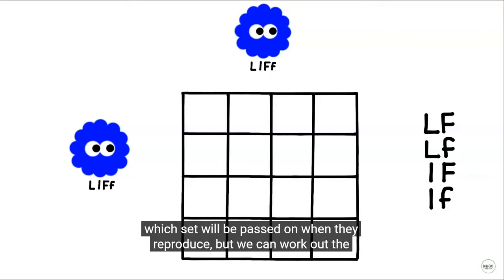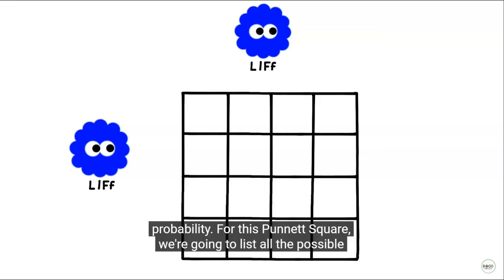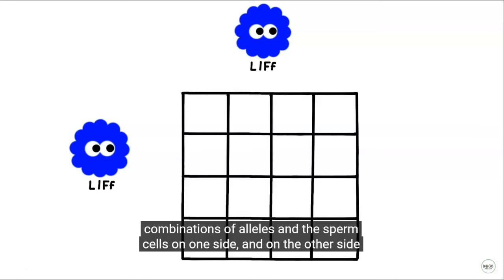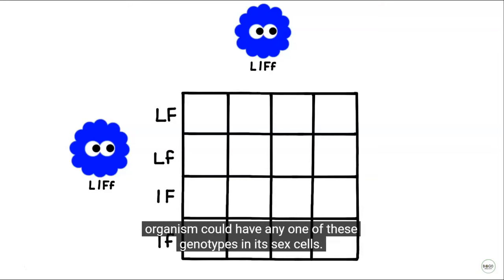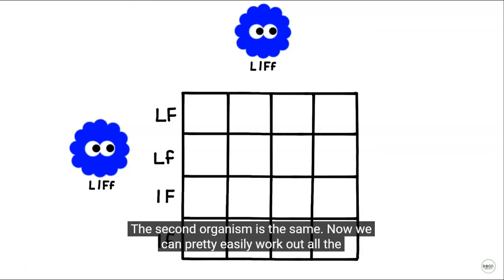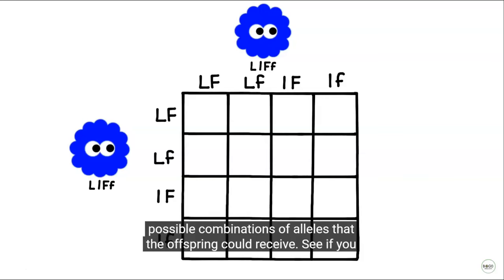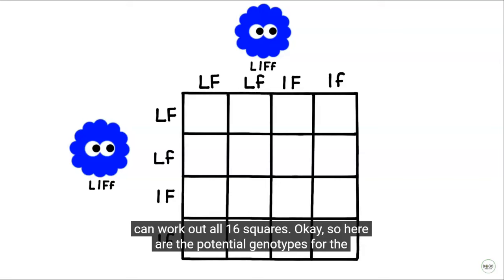We don't know which set will be passed on when they reproduce, but we can work out the probability. For this Punnett square, we're going to list all the possible combinations of alleles in the sperm cells on one side, and on the other side we'll list all the possible combinations of alleles in the egg cells. This first organism could have any one of these genotypes in its sex cells, and the second organism is the same. Now we can pretty easily work out all the possible combinations of alleles that the offspring could receive. See if you can work out all 16 squares.